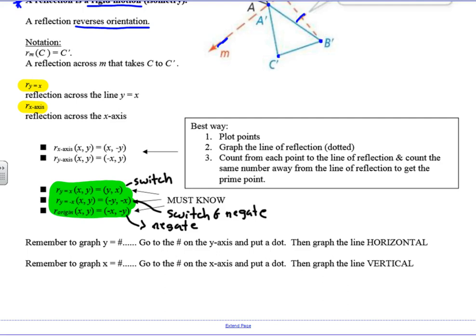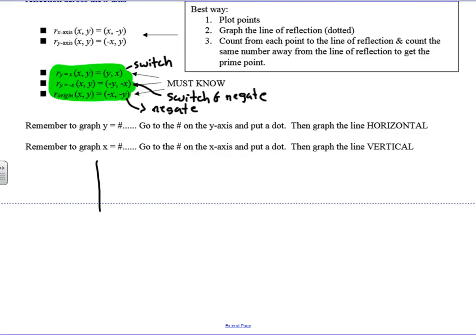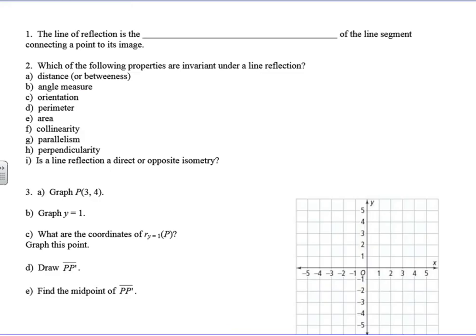Remember that y equals a number gives a horizontal line, and x equals a number gives a vertical line. For example, y = 3 is a horizontal line and x = −3 is a vertical line. The line of reflection is the perpendicular bisector of the line segment connecting a point to its image, as we just saw in the picture.